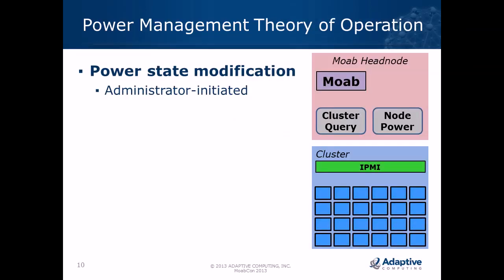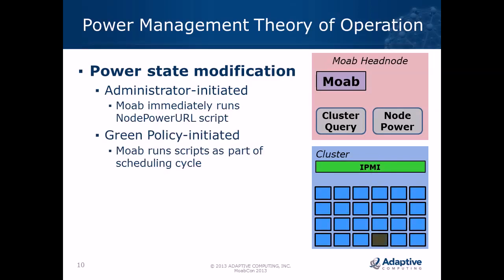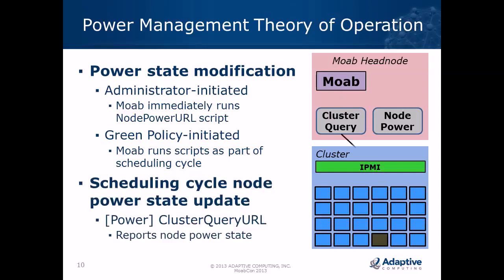To illustrate how these pieces work together: the node power URL can be executed by Moab if an administrator decides to power on or off a compute node independently of green computing. For an administrator-initiated occurrence, Moab immediately runs that script and powers off or on the node. The other method is through green policy initiating power management — Moab runs these scripts as part of the scheduling cycle.